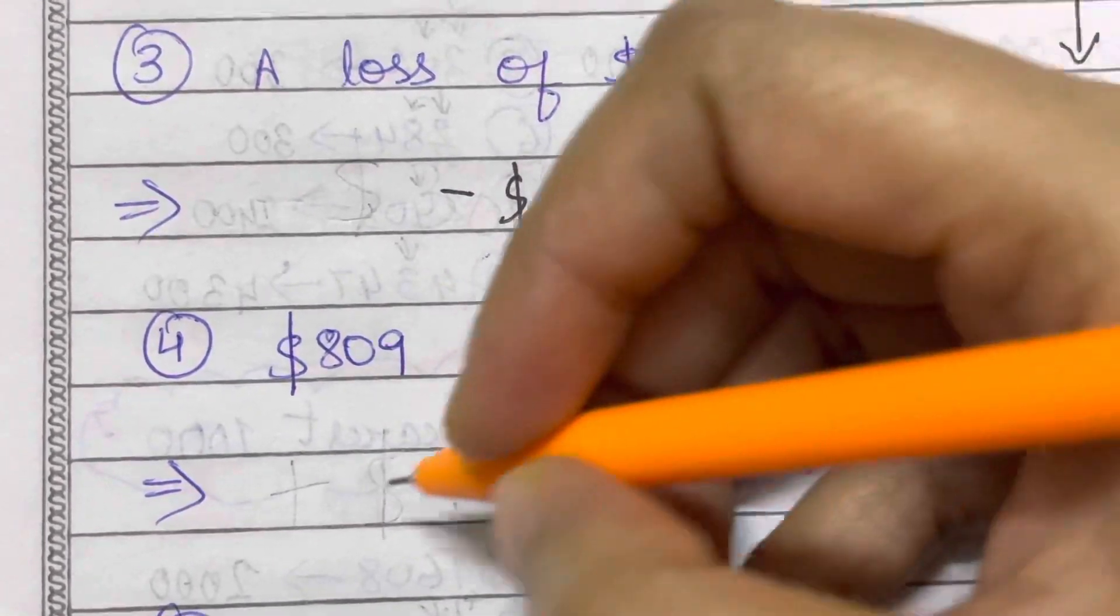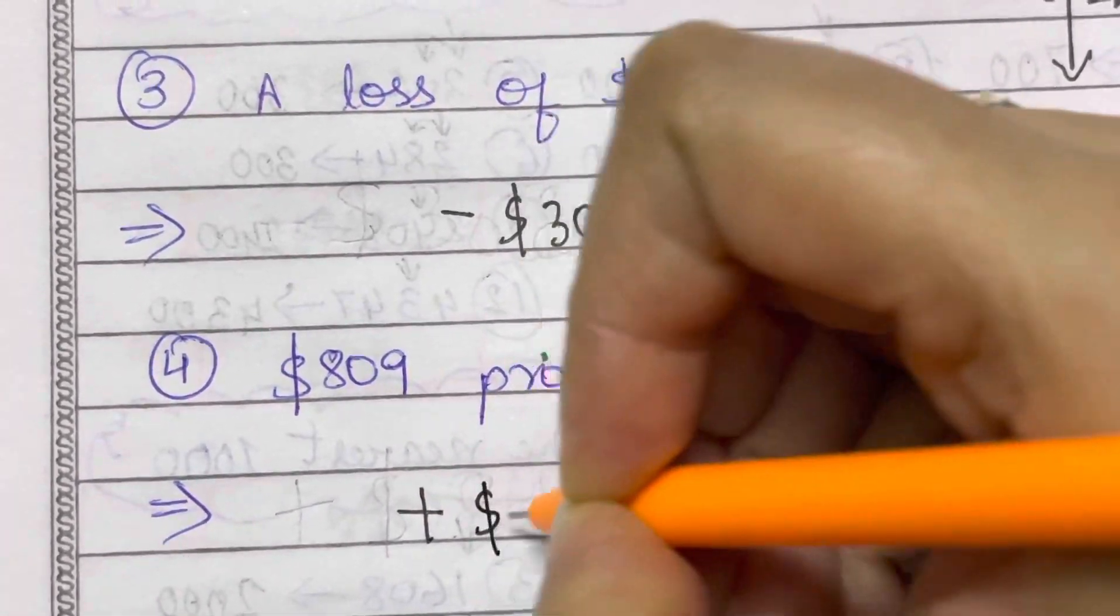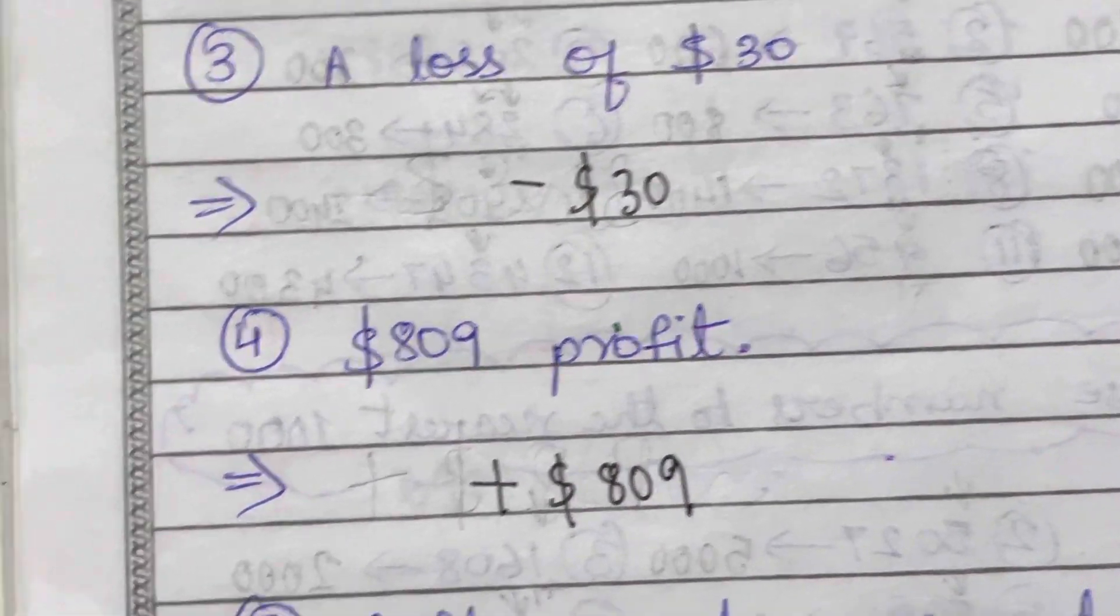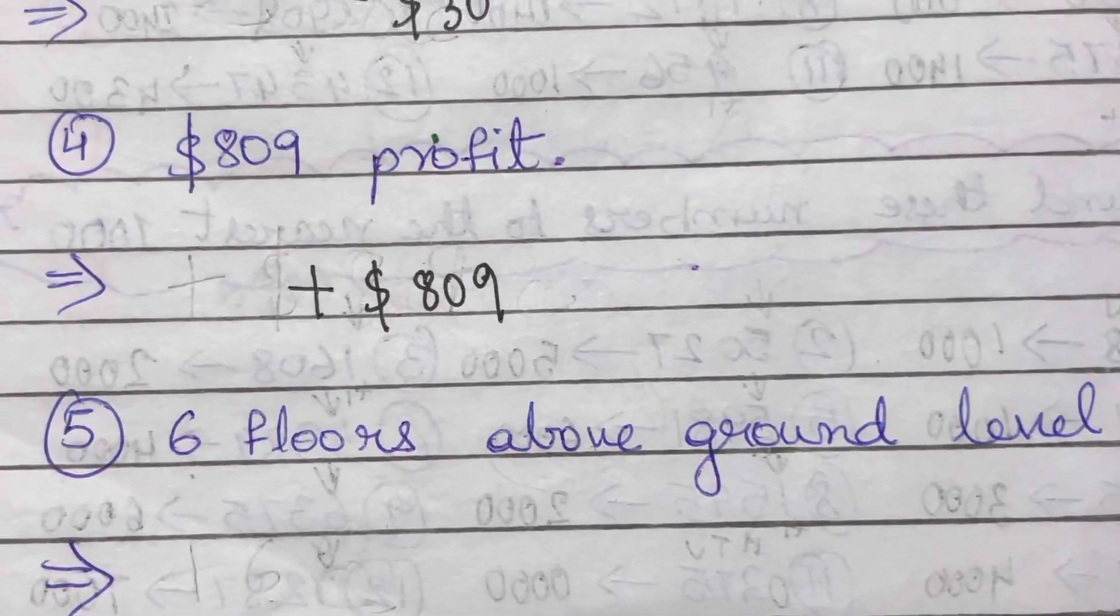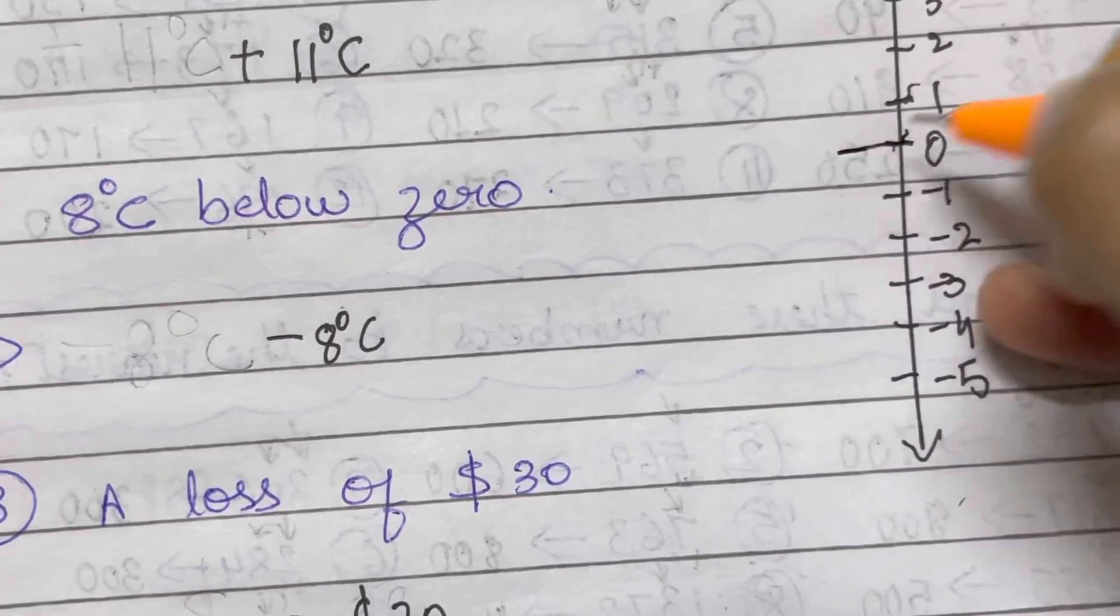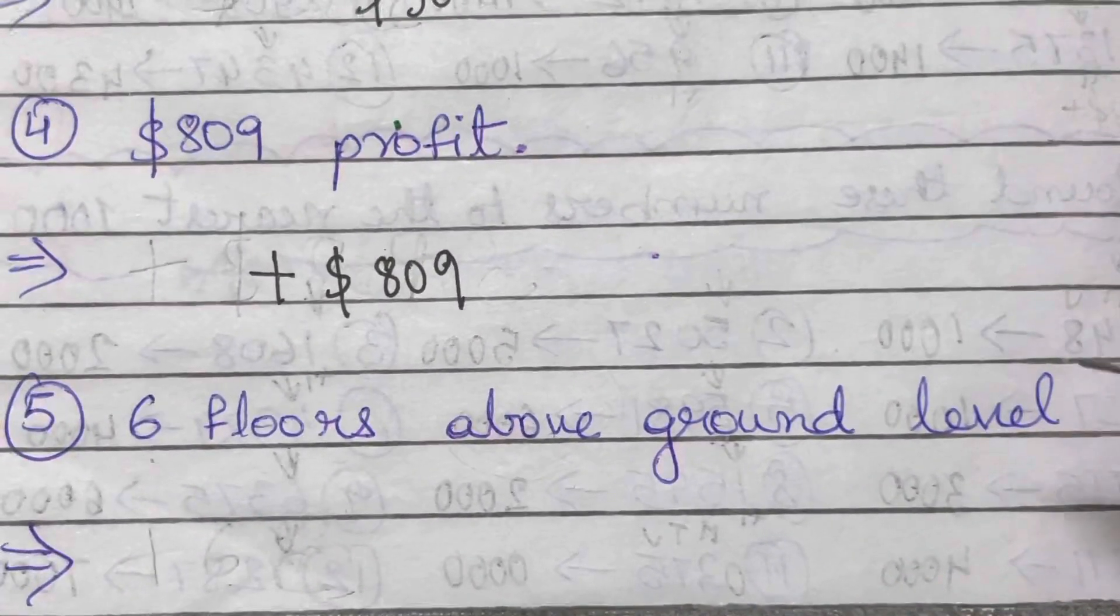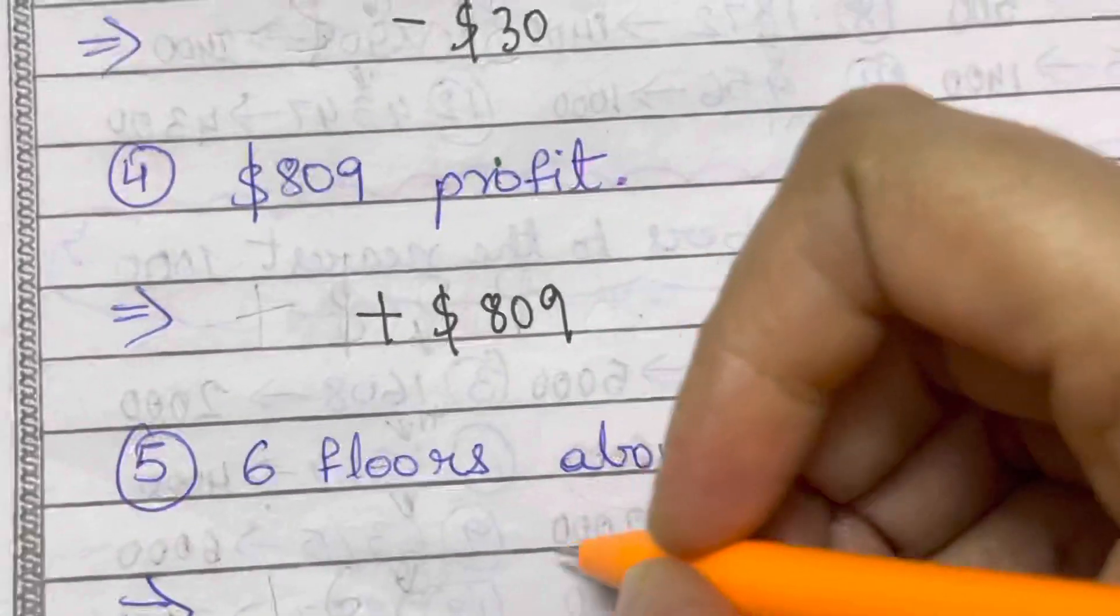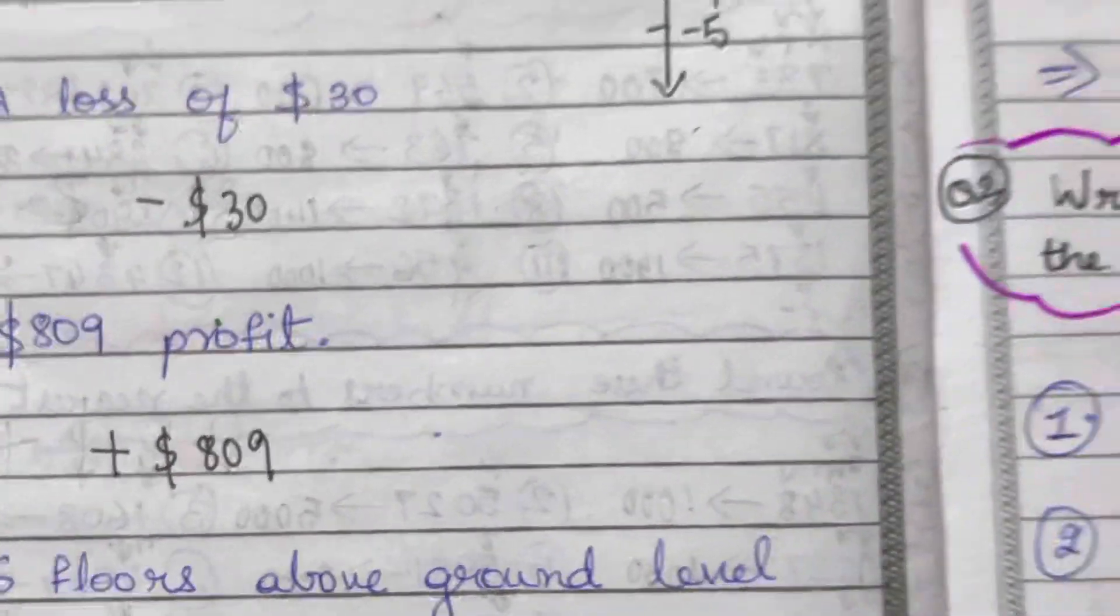Six floors above the ground level. Ground level is just zero - this is your ground level, zero. Now they're telling six floors above the ground level. So above is always positive, so that's plus six floors. That's what is represented.